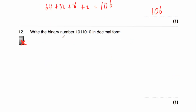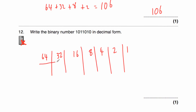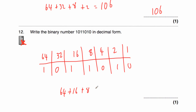Question 12 asks us to write the binary number 1011010 in decimal form. Putting in our columns: 1, 2, 4, 8, 16, 32, 64. That's seven columns, which is right. Our number is 1011010. To work out the decimal, we add together 64, 16, 8, and 2: 64 plus 16 equals 80, plus 8 equals 88, plus 2 equals 90. The binary number 1011010 in decimal form is 90.